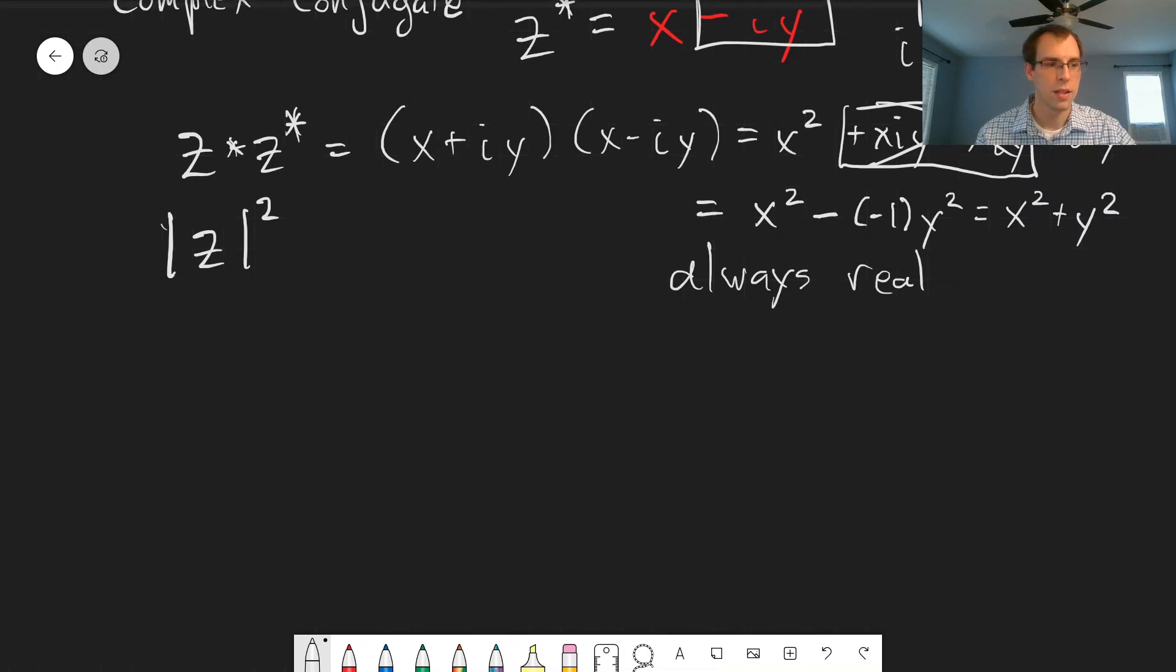One last useful thing with complex numbers that will show up is an equation known as Euler's formula. This gives us a way to relate complex numbers and exponentials of complex numbers to trigonometric functions. The formula is e to the ix equals cosine x plus i sine x. This shows up in the wave equations we'll talk about in chapter 2, as well as the quantum wave equations in the rest of the class. Being able to convert between trigonometric functions like sine and cosine and complex exponentials ends up being really useful, especially when you have differential equations.